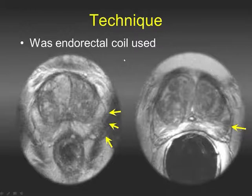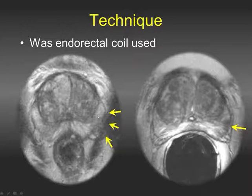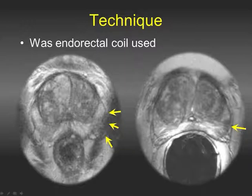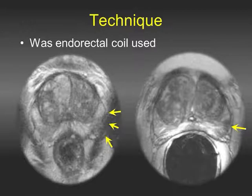We get asked frequently whether we routinely use an endorectal coil. Unless there is a contraindication, we do place an endorectal coil in all our prostate MRs. For example, a patient imaged without an endorectal coil makes it very difficult to appreciate the lateral boundary of the peripheral zone, making it hard to determine extracapsular extension. The same patient imaged with the endorectal coil allows you to clearly see the outline of the peripheral zone and confidently comment on extracapsular extension.